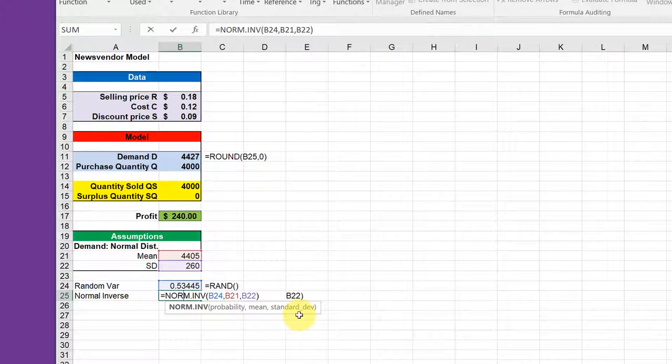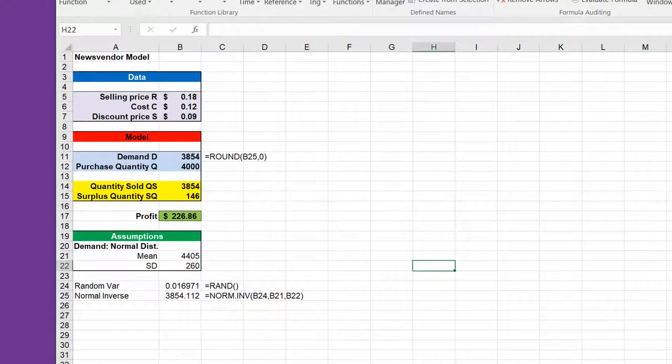We're going to use the random variable to give us the probability, and we know the mean and standard deviation from the newsboy's records. Every time I manually recalculate the spreadsheet, the random variable changes and is always between zero and one, which allows us to use it as a probability. The norm inverse returns x values based on that probability that fit into the distribution.